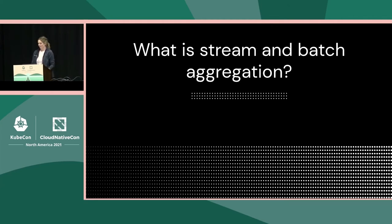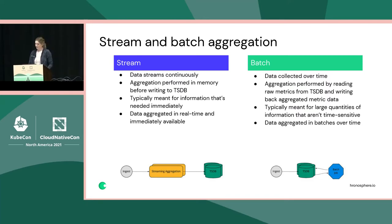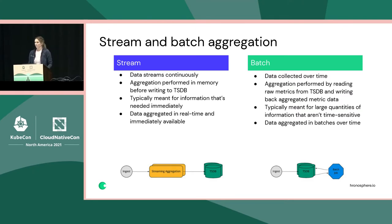Two different ways of doing aggregation are streaming and batch. With stream aggregation, data is collected and streamed continuously. The aggregation is performed in memory on the ingest path before being written to your time series database. This is typically very useful for information that's needed immediately — like dashboards — since your data is aggregated in real time and available immediately for query once written to your time series database.